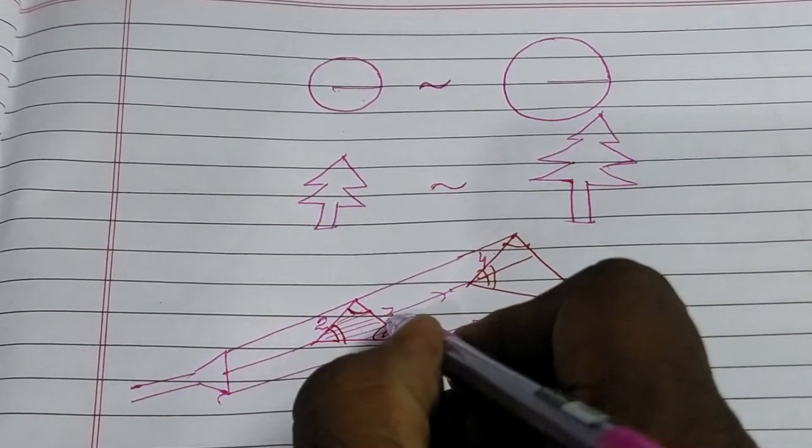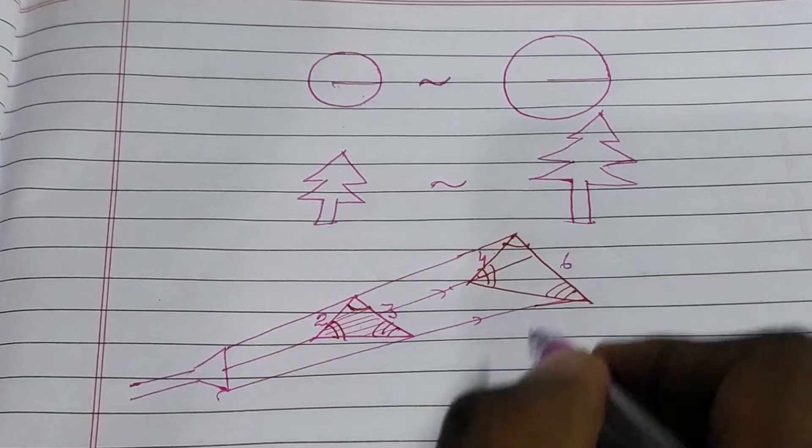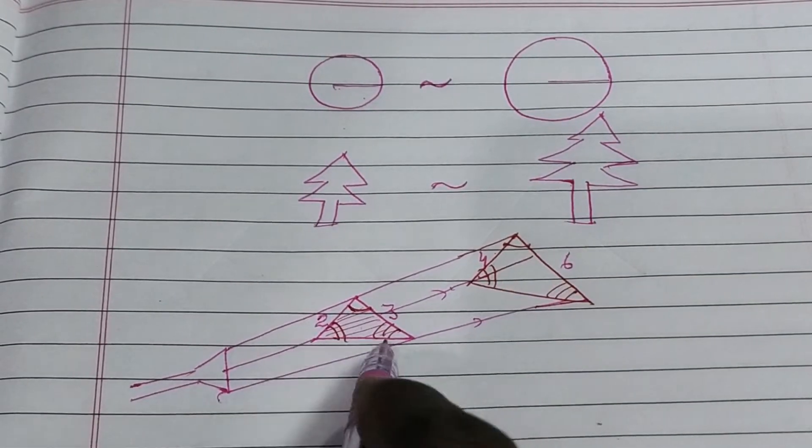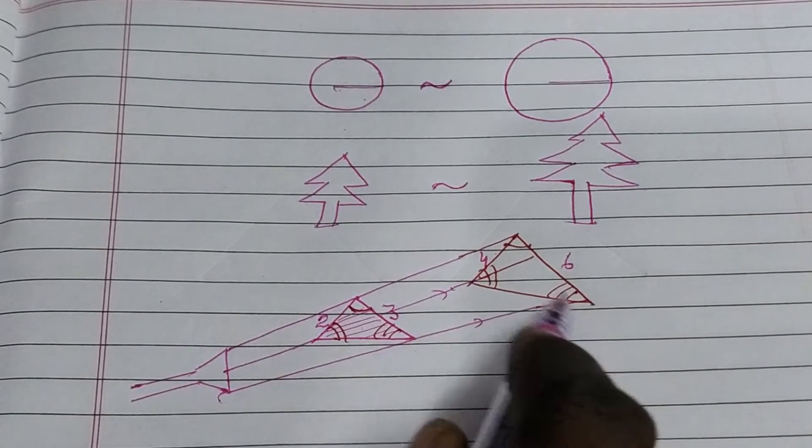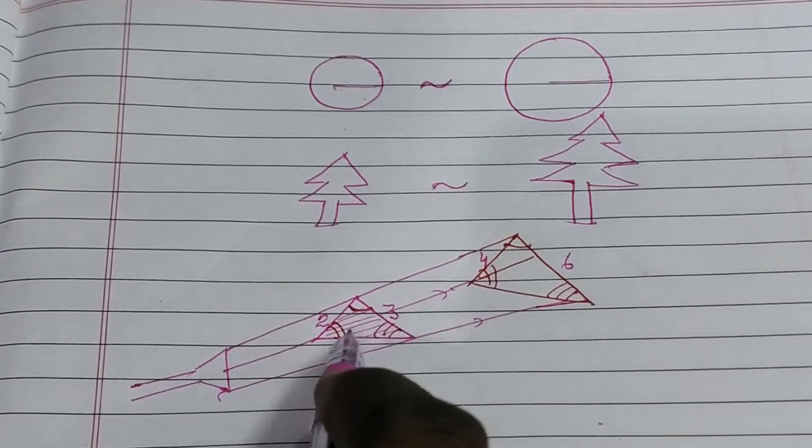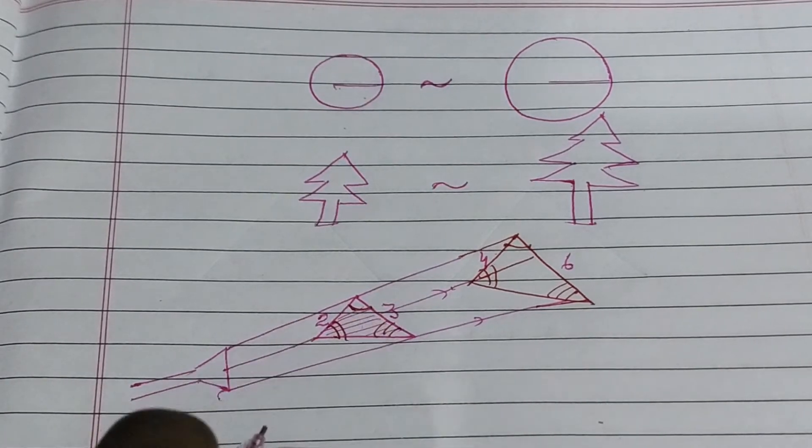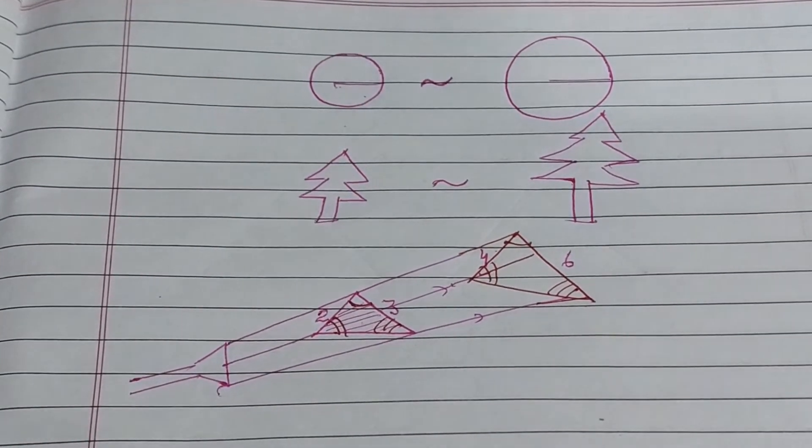Similarly, if this is 3 cm, this is 6 cm, again the ratio is 1 is to 2. Similarly, they will be of this same ratio. So, you can say that these two are similar triangle. Now, we will see that there are 3 properties of similar triangles.